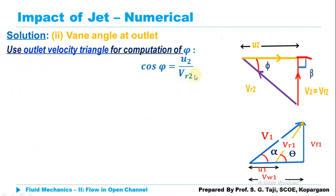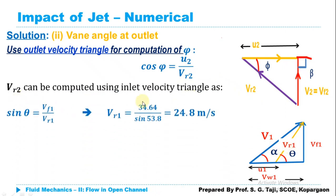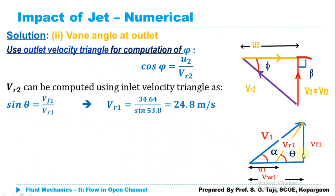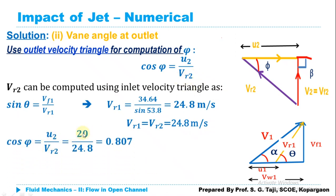Putting in the values: Vr1 = 20 / sin(53.8°) = 24.8 m/s. Therefore Vr2 = Vr1 = 24.8 m/s. Now, cos(φ) = u2 / Vr2 = 20 / 24.8 = 0.808. Therefore φ = cos⁻¹(0.808) = 36.2°.